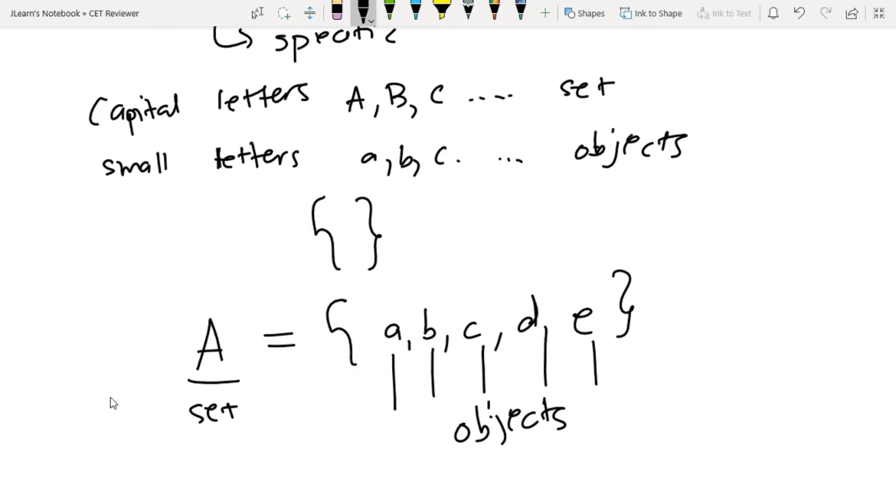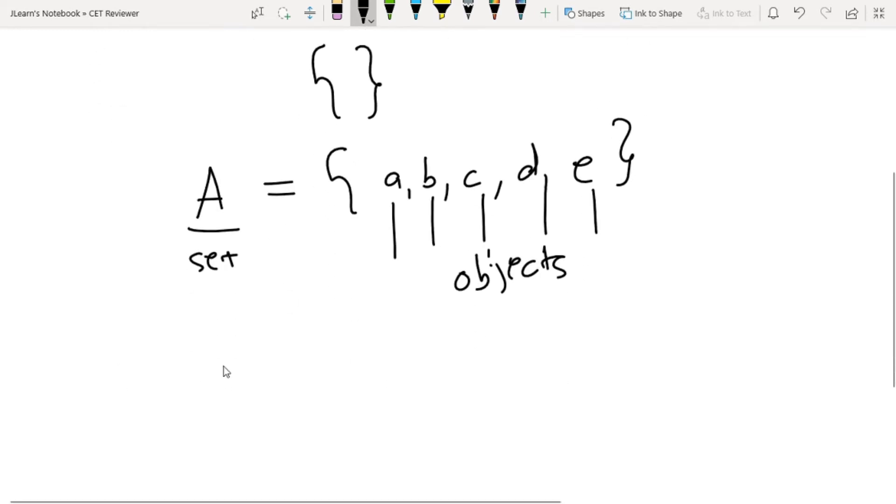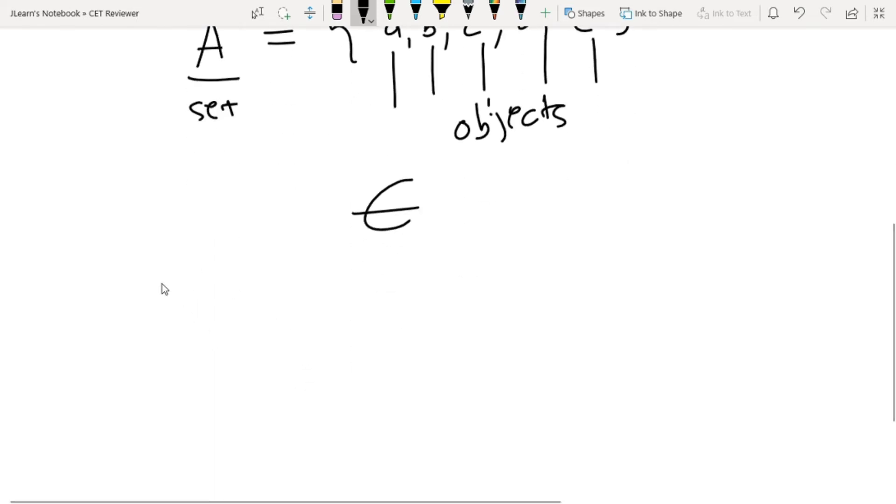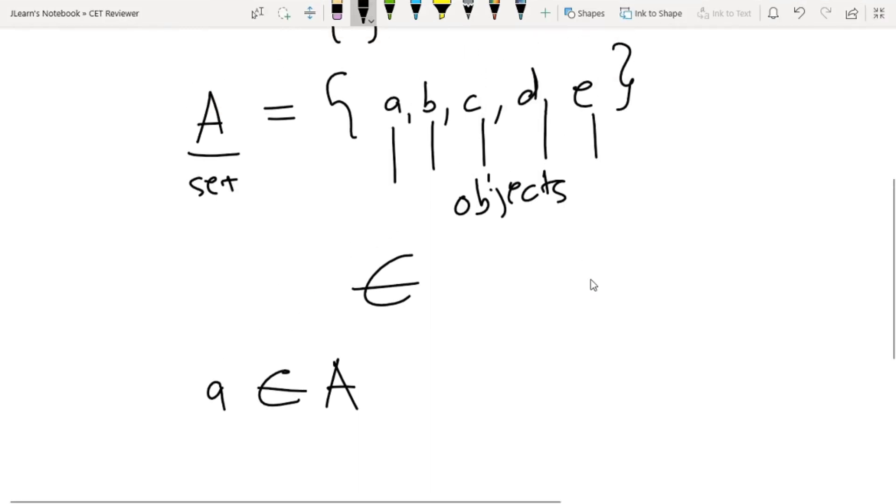How do we represent if the object is inside a set or not? We use this notation. The meaning is that object a is in set A, which is true because set A consists of a, b, c, d, and e. But x is not in the set.